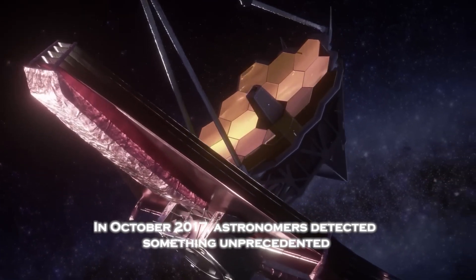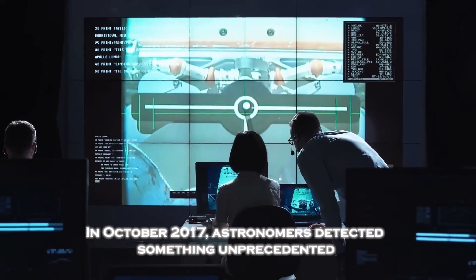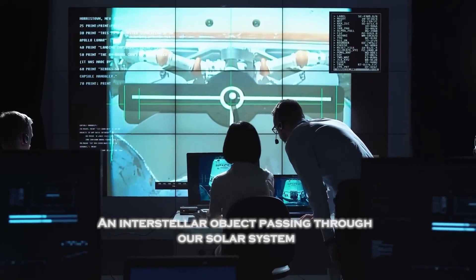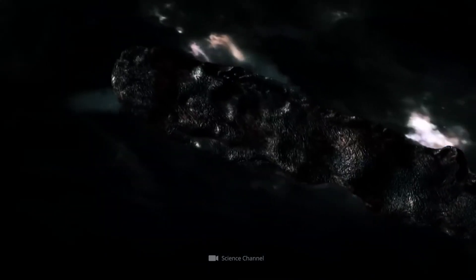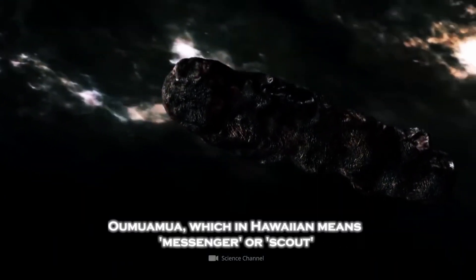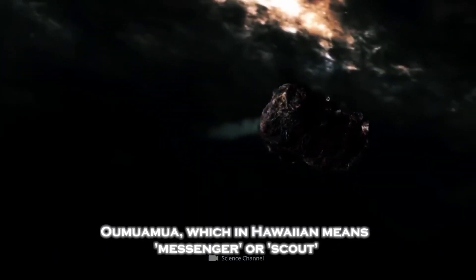In October 2017, astronomers detected something unprecedented, an interstellar object passing through our solar system. They named it Oumuamua, which in Hawaiian means messenger or scout.